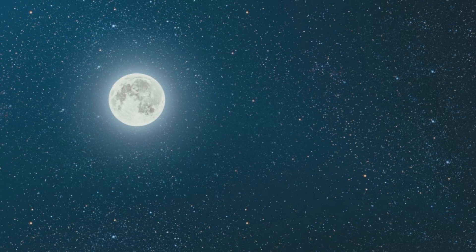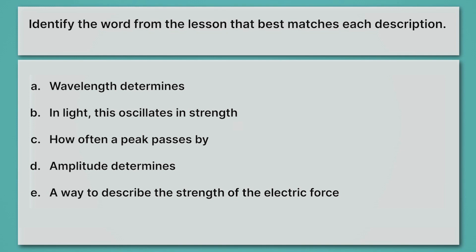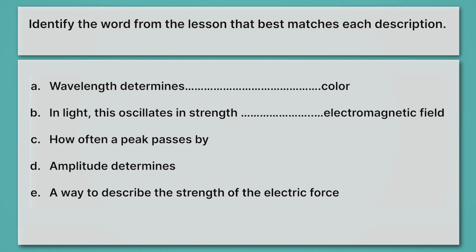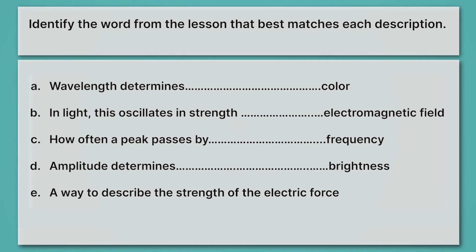Let's see if we can put into practice all of the words we've just learned. Identify the word from the lesson that best matches each description. Pause the video and give this a try, then we'll come back and look at the answers. Wavelength determines color. In light, this oscillates in strength — that's the electromagnetic field; it would also be reasonable to say the electric field or the magnetic field. How often a peak passes by — that's frequency. Amplitude determines brightness; higher amplitude means a brighter light. A way to describe the strength of the electric force — that's an electric field. It's the strength of the electric force that oscillates in light.